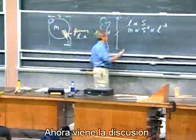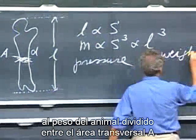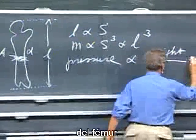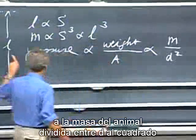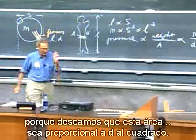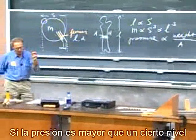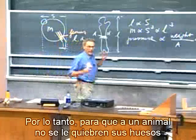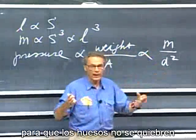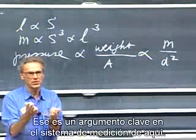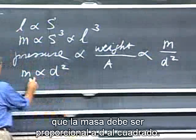Now comes the argument. Pressure on the femur is proportional to the weight of the animal divided by the cross-section A of the femur. That is proportional to the mass of the animal divided by D², because the area is proportional to D². If the pressure is higher than a certain level, the bones will break. Therefore, for an animal not to break its bones, when the mass goes up by a factor of four, D² must also go up by a factor of four. Therefore, the mass must be proportional to D². This is the breaking argument.